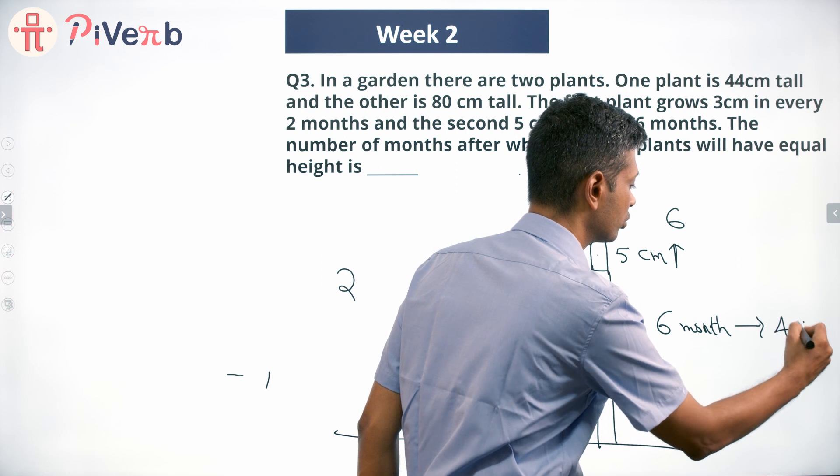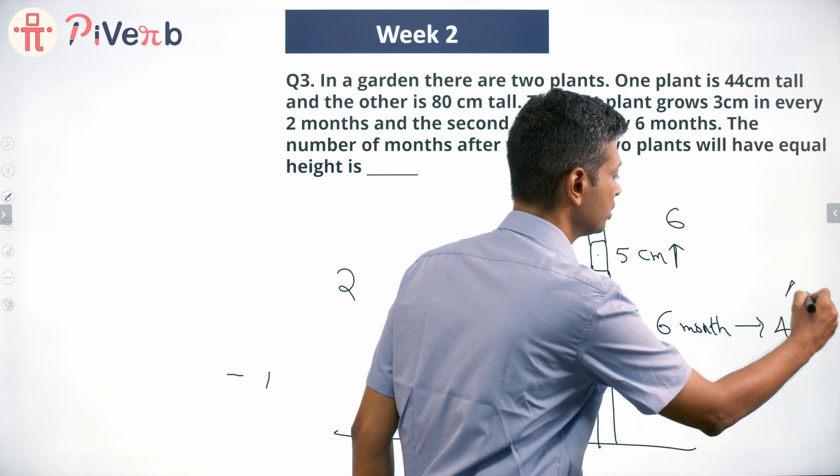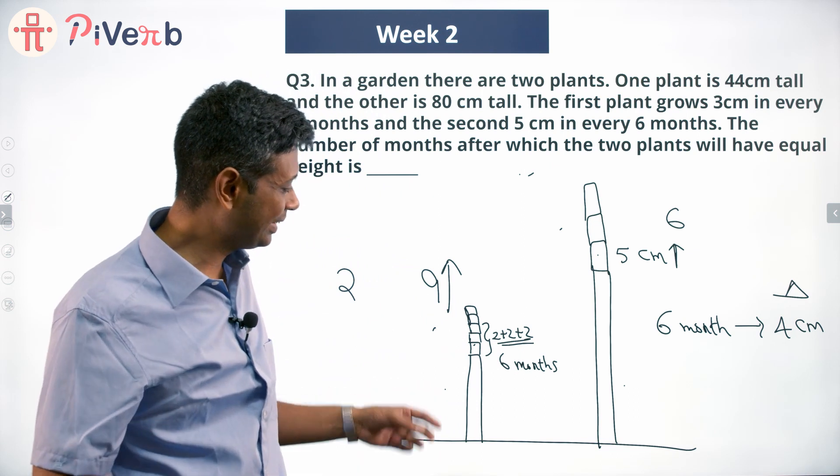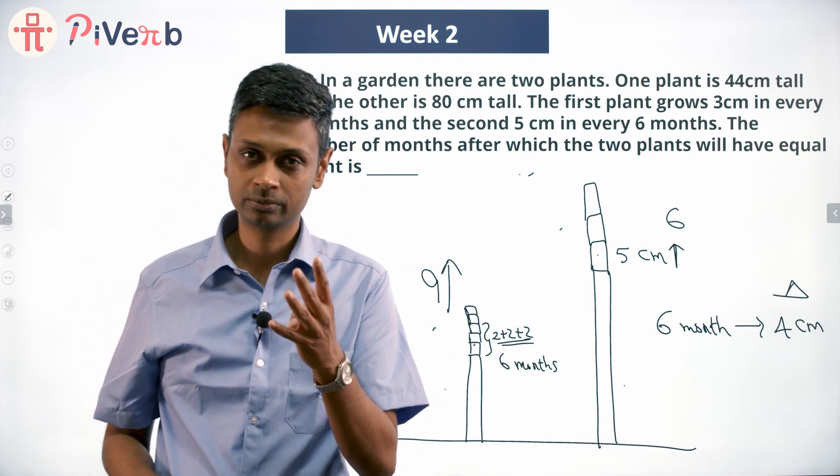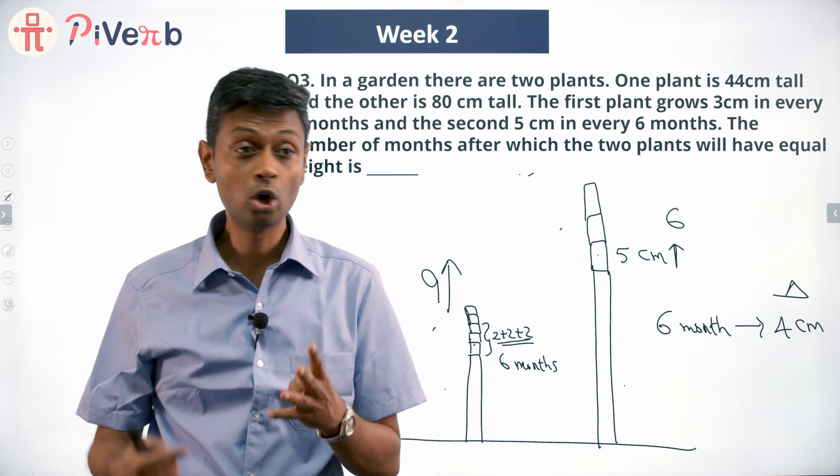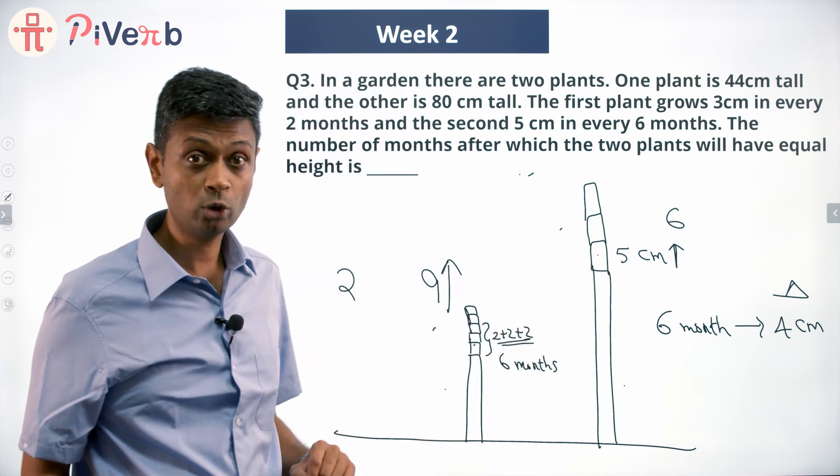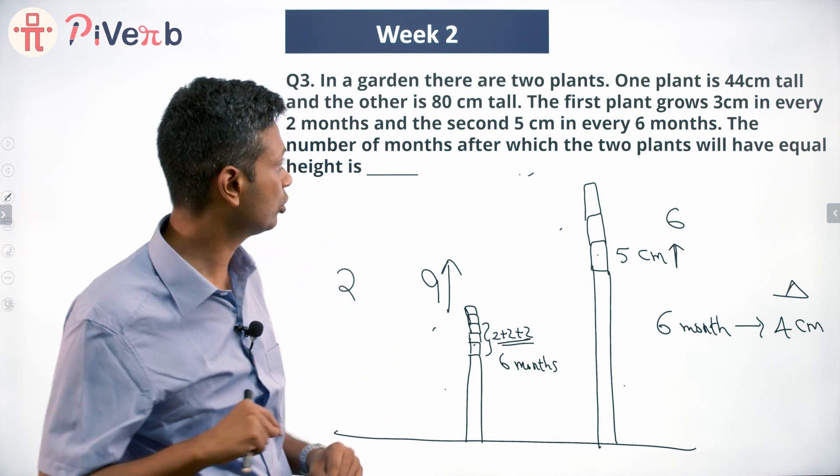Difference I'm going to call delta. So every 6 months this one gains 4 centimeters. This grows 4 centimeters more than that one. Now I'm not going to worry about each step, I'm going to worry only about the difference between these two.